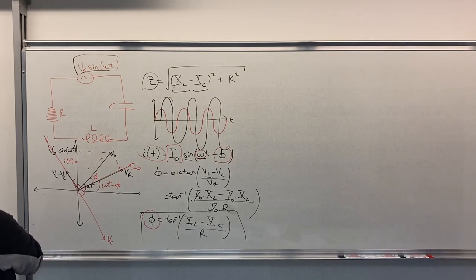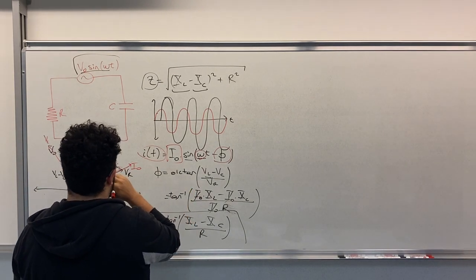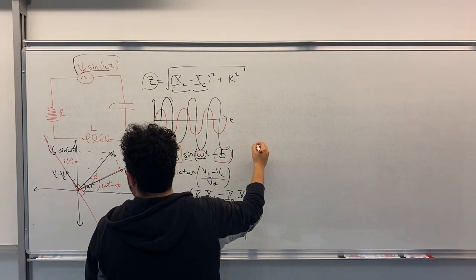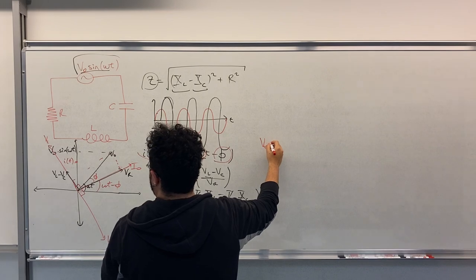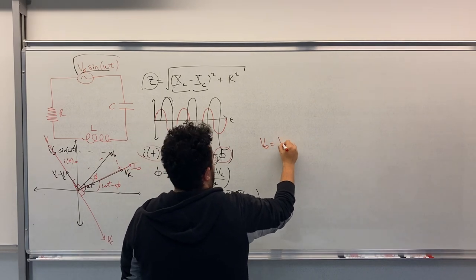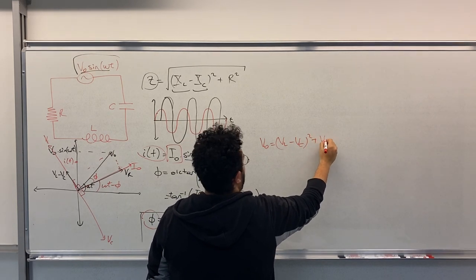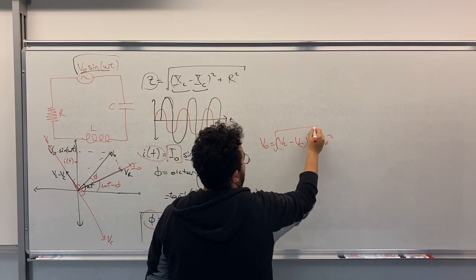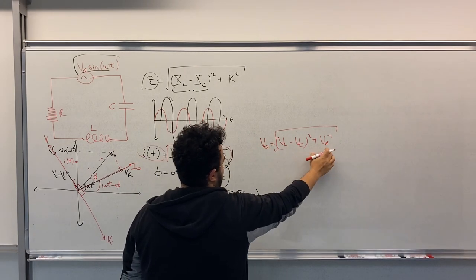Now you can calculate the magnitude by simply writing V0 equals to square root of VL minus VC squared plus VR squared. So we can find V0 as this one by using this notation.